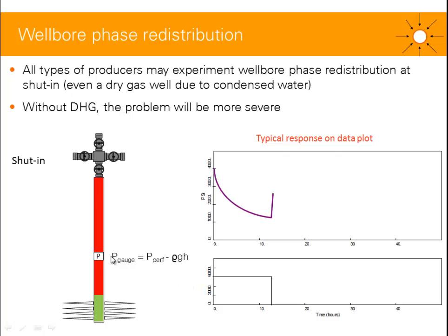The pressure of the gauge is equal to the pressure of the perforation minus the hydrostatic term, which is rho (the density) times G (the gravitational constant) times H — the vertical TVD height between the gauge and the perforation.